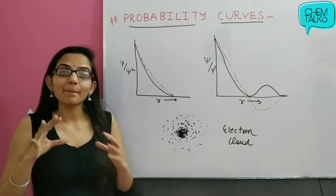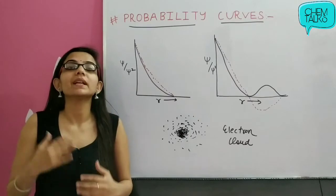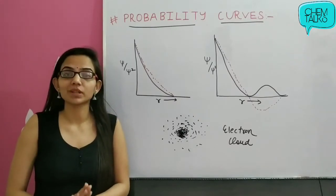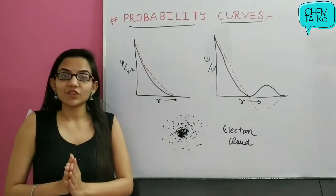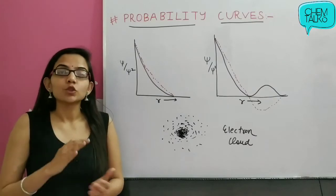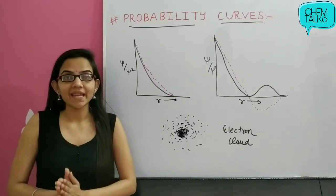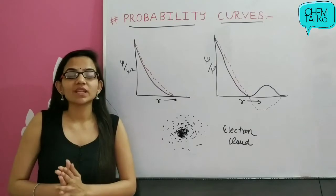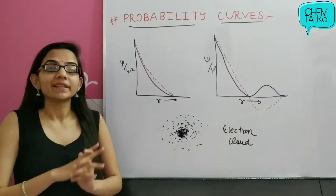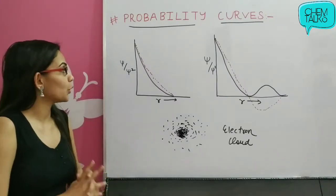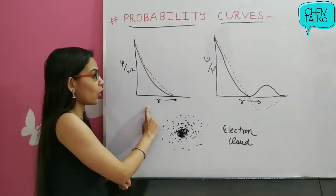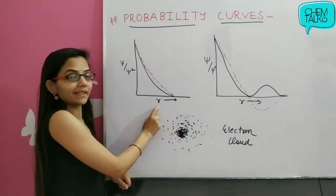Now, what we are talking about is the probability of finding the electron. How do we represent this probability? We use the probability distribution curves. What are the probability distribution curves? Basically, we use the Schrödinger wave equation — psi and psi-square, i.e. the wave function values — and we plot them against the distance of the electron from the nucleus, r.